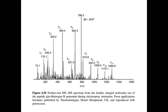For example, the loss of neutral CO (carbon monoxide, mass 28) from a singly charged ion of mass-to-charge 250 yields an ion of mass-to-charge 222. Whereas from a doubly charged ion of mass-to-charge 125, it would yield an ion of mass-to-charge 111 (that is 222 divided by 2). The loss of CO+ from a doubly charged ion of mass-to-charge 122 would yield an ion of mass-to-charge 222. The strength of MS-MS is its ability to select a single ion and study it in isolation.